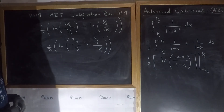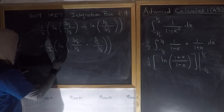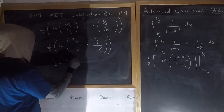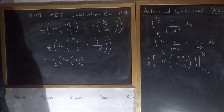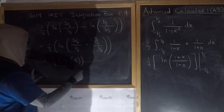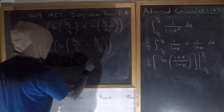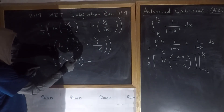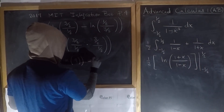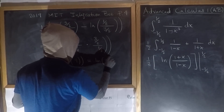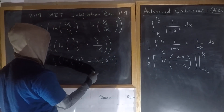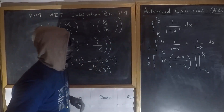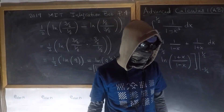So we get one half times ln of 9. Now applying the logarithm power rule, we can bring the one half up as an exponent inside the argument, giving us ln of 9 to the one half. Since 9 to the one half is the square root of 9, our final answer reduces to ln(3). That's it for problem four — keep watching.